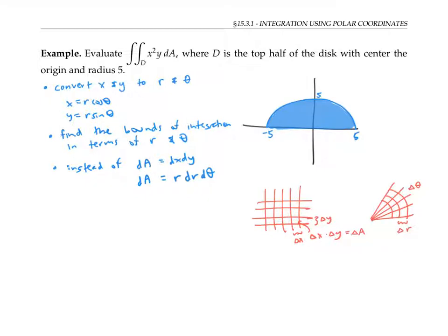it's not equal to delta r times delta theta. Instead, it's approximately equal to delta r times r delta theta.